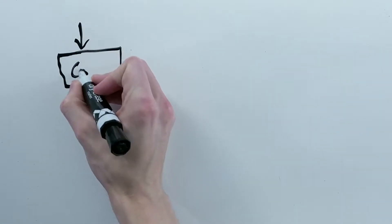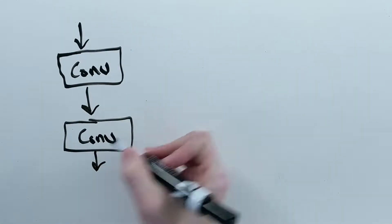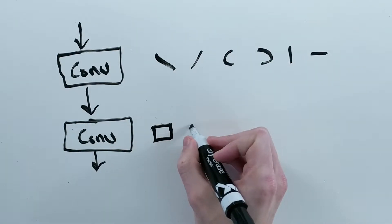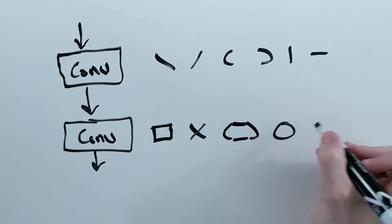In the last couple of videos, we saw that convolutional neural networks create features to represent parts of images, and then later combine those features together to understand larger and larger parts of the image.